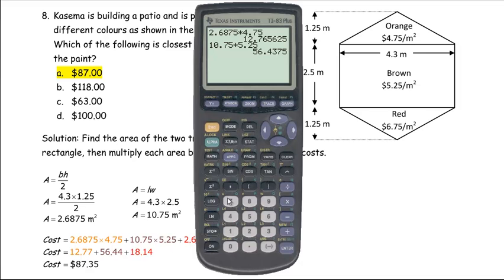But then the red, again, the area is 2.6875. And we multiply that by the cost. It is $6.75 per square meter for the red paint. So that will round to $18.14.